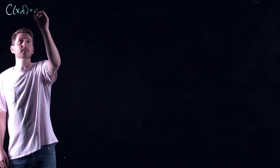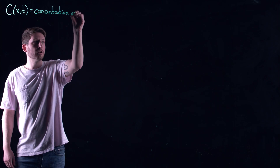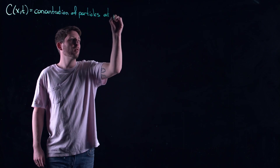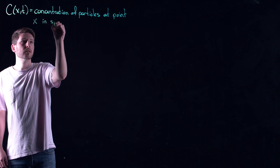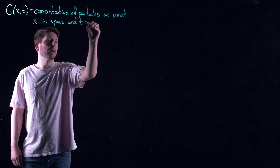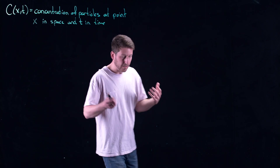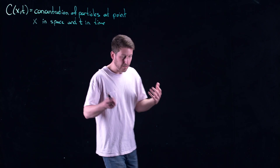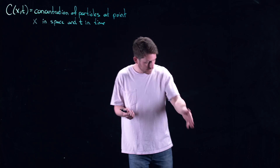Let c(x,t) be the concentration of particles at point x in space and time t. There's a double dependence here — space and time — so you're spreading throughout space as time goes on. You could pause time and ask: at this point in time, at that point in space, what is the concentration of these particles?